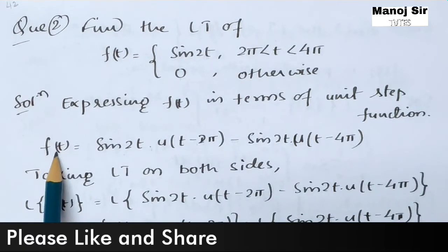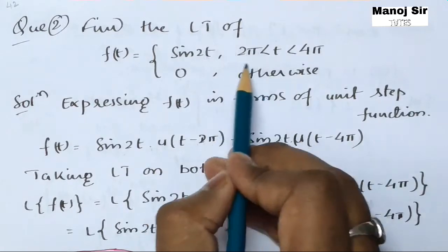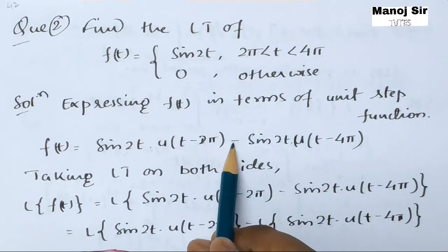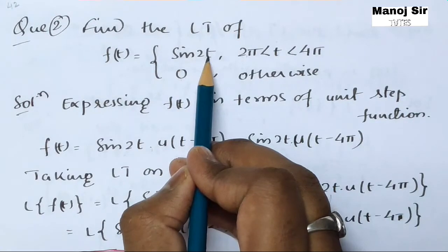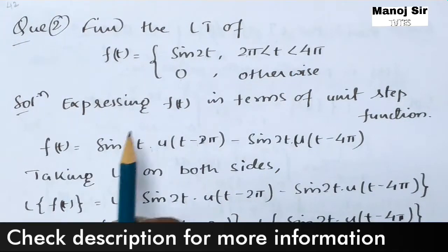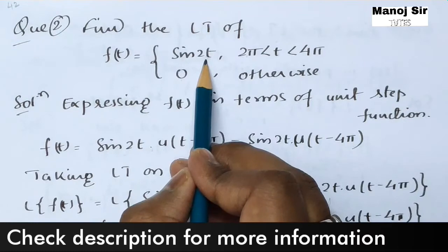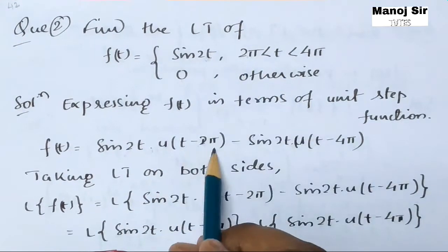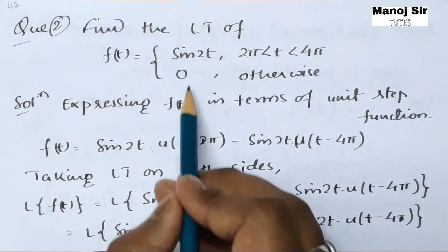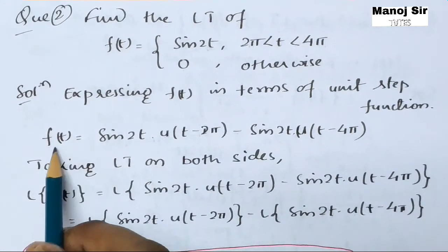We express f(t) in terms of the unit step function as: f(t) = sine(2t) · u(t − 2π) − sine(2t) · u(t − 4π). Since f(t) is 0 otherwise, we are not interested in any additional part. This is our function f(t) expressed in terms of unit step functions.